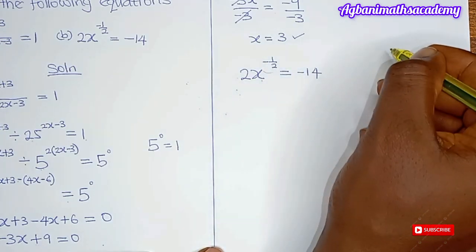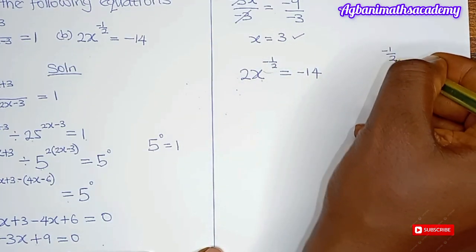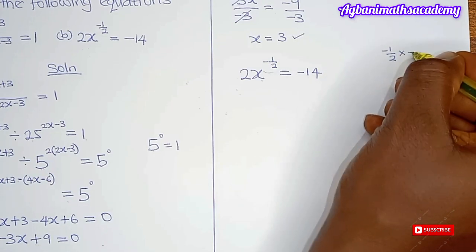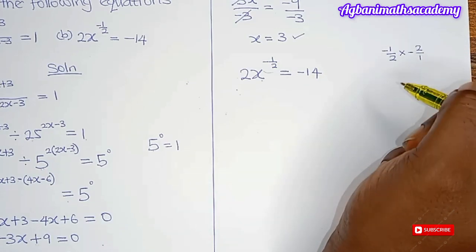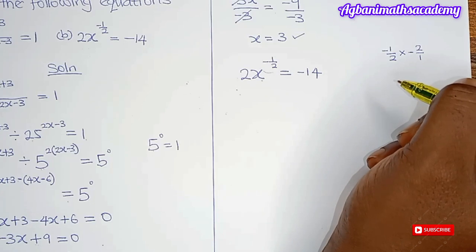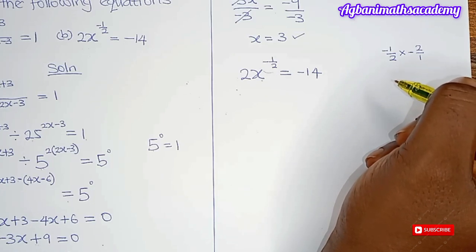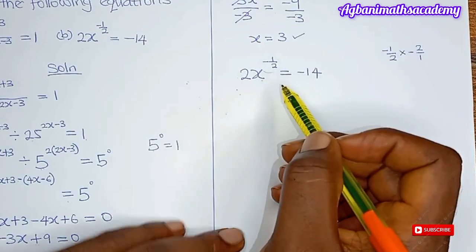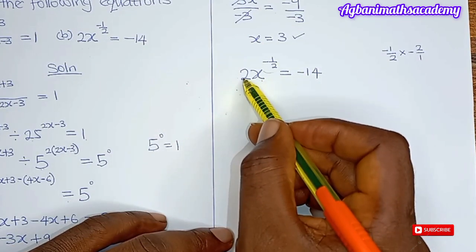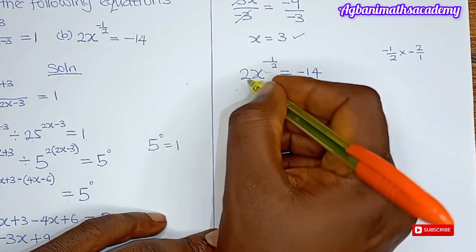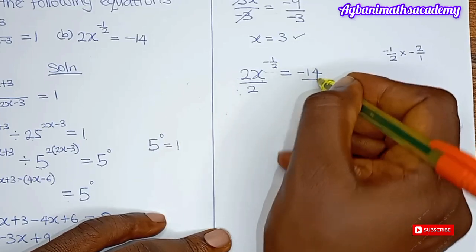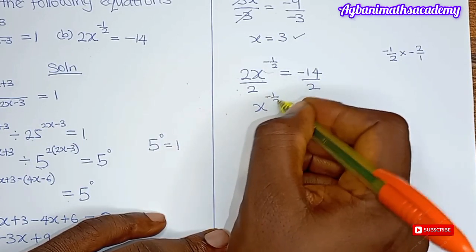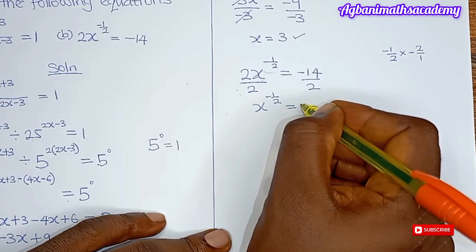The exponent on the left is minus 1 all over 2, so its inverse is minus 2 all over 1. But before we apply that, we first divide both sides of the equation by 2 to eliminate the coefficient 2. This gives us x to the power of minus 1 over 2 is equal to minus 7.